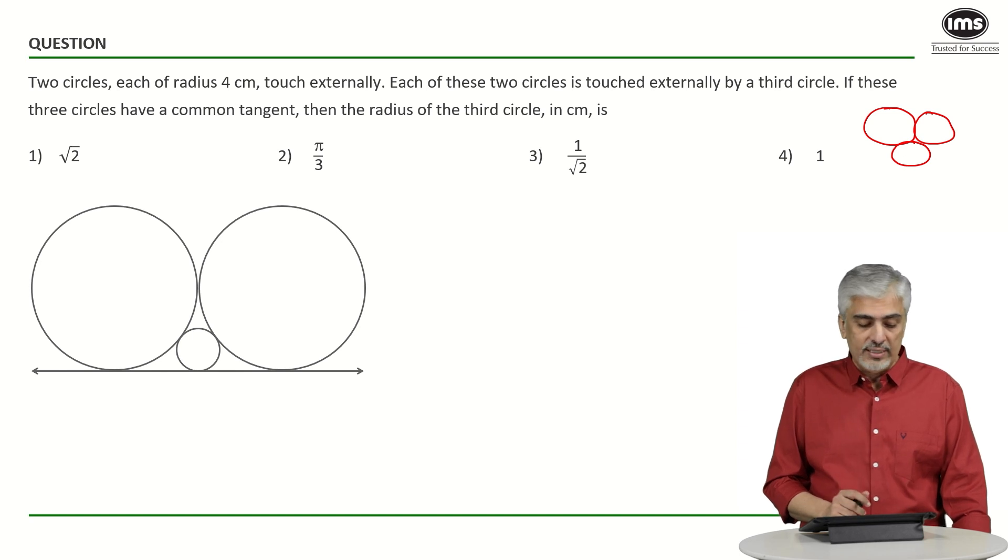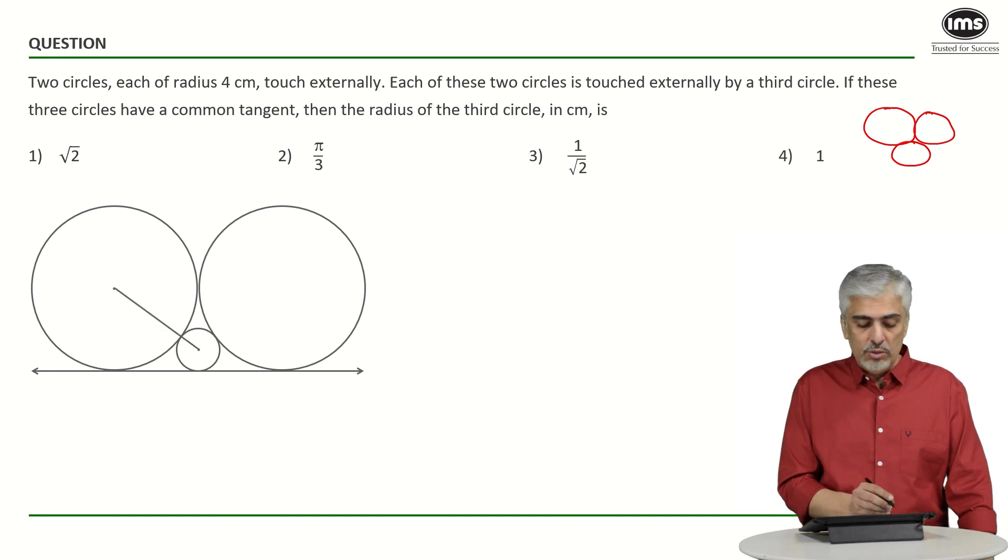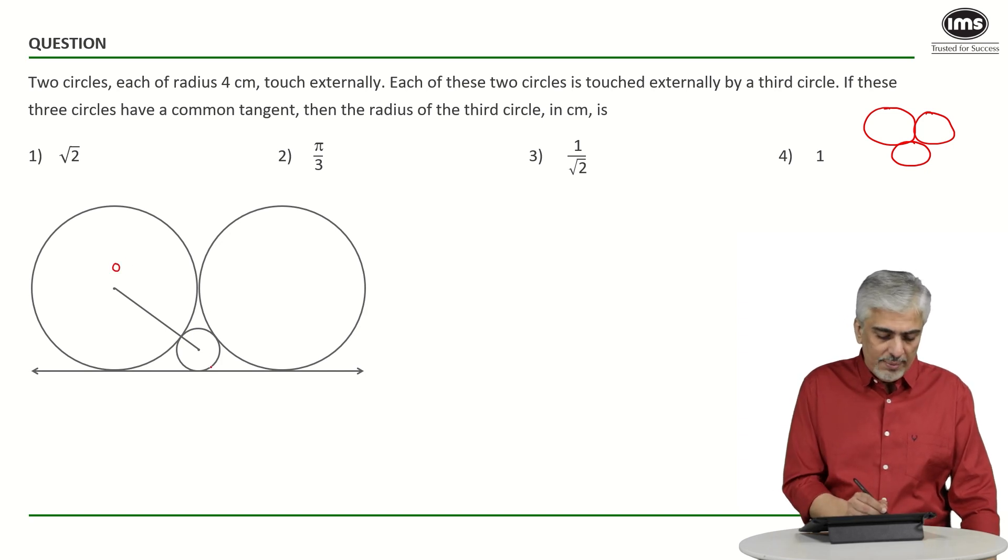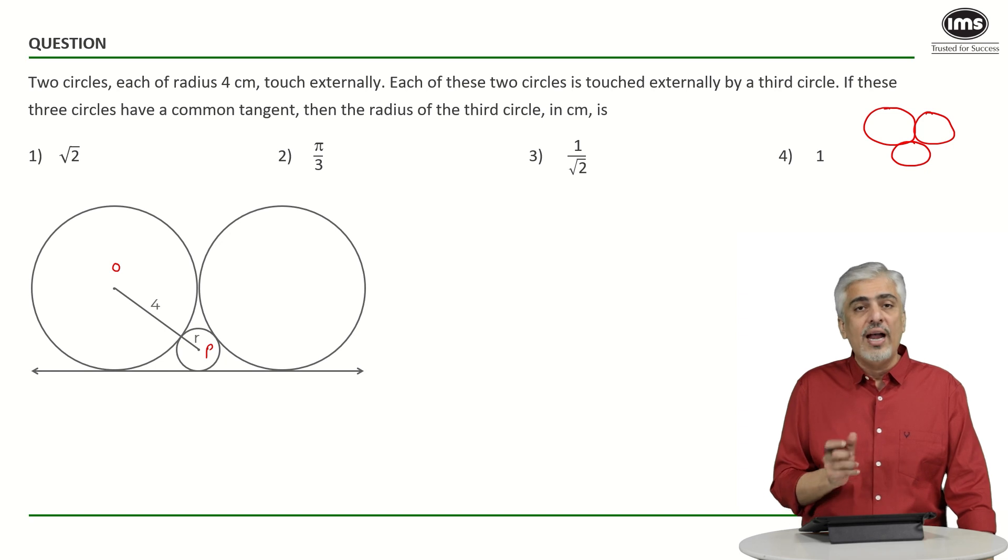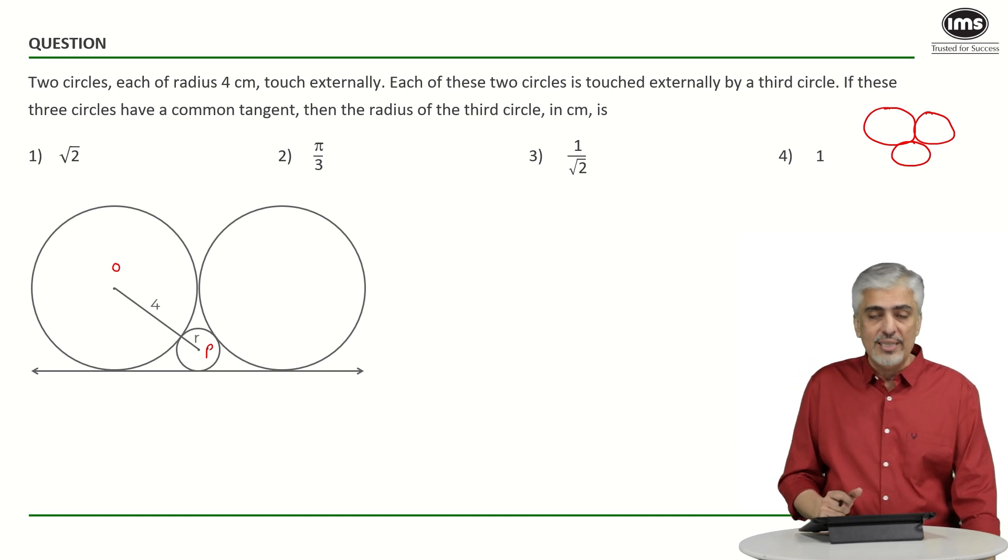Now, let us see what else has been asked or given to us. They have told us the radius of the initial two circles were 4 centimeters and they have asked us to find the radius of the small circle. Obviously, let us take the radius of the small circle as R. We have now taken the center of the two circles over here, the bigger circle and the smaller circle. Let us call them as O and P to understand. So I know OP will be 4 plus R because the radius of the larger circle is 4 and the radius of the smaller circle is R.